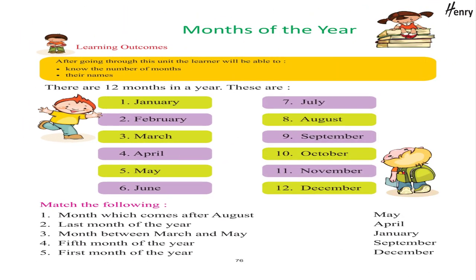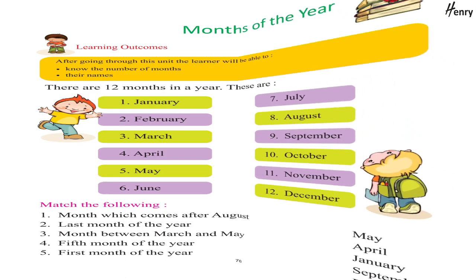Months of the Year — Learning Outcome: After going through this unit, the learner will be able to know the number of months and their names. There are 12 months in a year: January, February, March, April, May, June, July, August, September, October, November, December. Match the following.